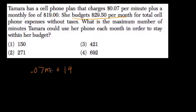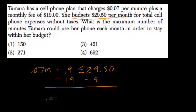So, how many minutes can you use, plus the 19, and always stay less than or equal to $29.50? That's the goal here. We subtract 19 from both sides. What do we get? 0.07m is less than or equal to $10.50.